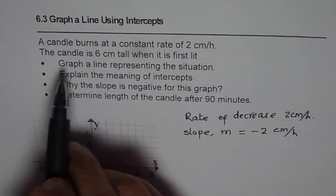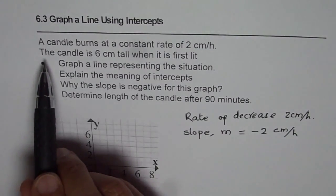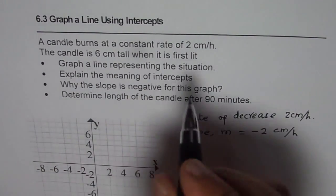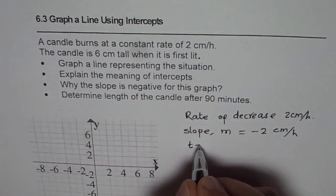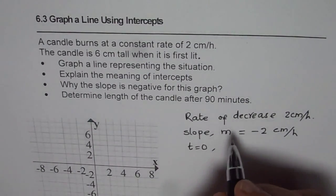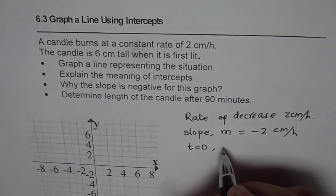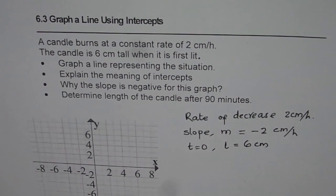So that is the meaning of a candle burns at a constant rate of 2 cm per hour. The candle is 6 cm tall when it is first lit. So that means when t equals 0, when time is 0, at that time the height of the candle or length of the candle equals 6 cm. That is what it means.